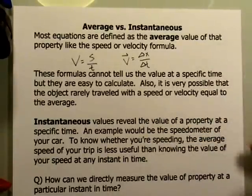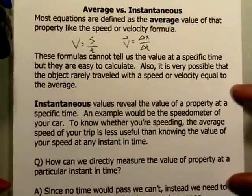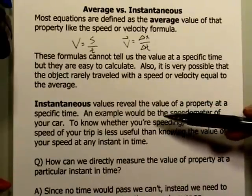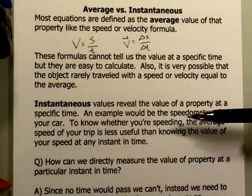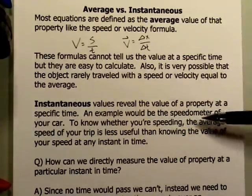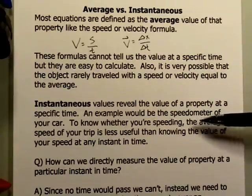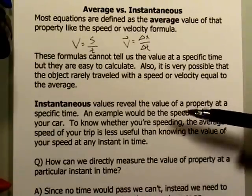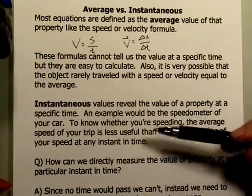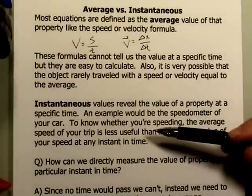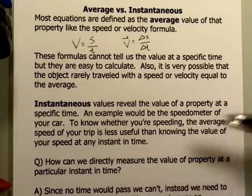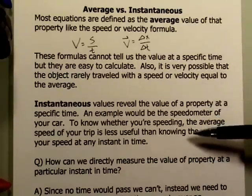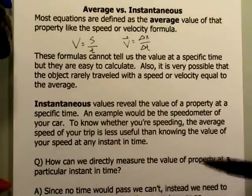In many cases, the object may have either very rarely or only some of the time traveled with the average velocity. In many cases, we would actually rather have the instantaneous value — the value of that property at a particular instant in time. An excellent example is the speedometer of your car, which is extremely important for knowing whether you're speeding. If you're traveling and want to know if you're speeding, the average value of your trip is not as useful, because every time you slow down or stop at a light, that lowers your average. You really need to know at every instant in time how fast you are moving.